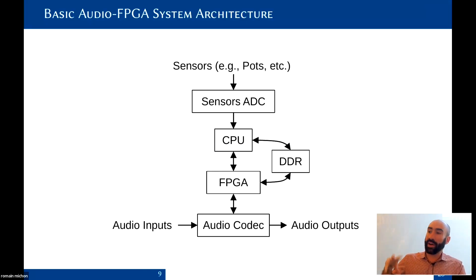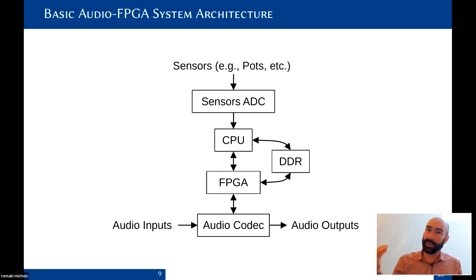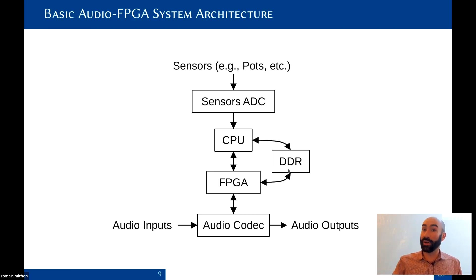A standard audio FPGA system usually has both an FPGA and a CPU. Most chips and boards have a CPU built in. Some operations are done on the CPU because it's more practical, and some on the FPGA. They typically share external DDR memory, which is necessary especially for reverbs or echoes.